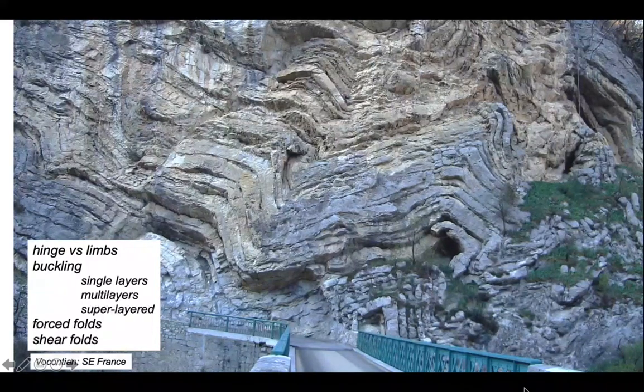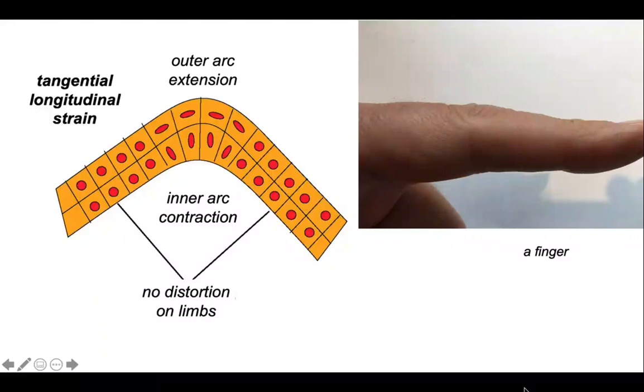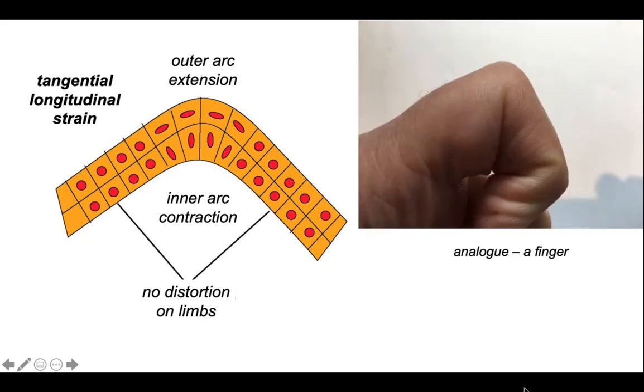Let's start off by looking at how an individual layer might actually fold. So the first mechanism we're going to look at is something called tangential longitudinal strain, where the bending can occur by outer arc extension and inner arc contraction, with no distortion on the limbs. And you have an analogy of this in your own hands. It's a finger. If you bend your finger, the outer side of your knuckle stretches and the inside contracts, like this.